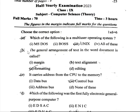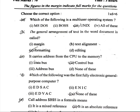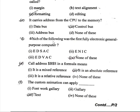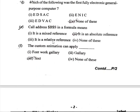One mark each. The general arrangement of text in a Word document is called what. It carries address from the CPU to the monitor. Which of the following was the first fully electronic general purpose computer?